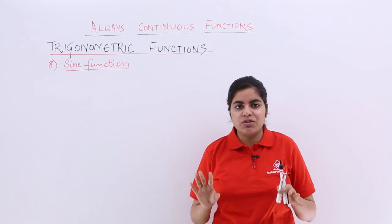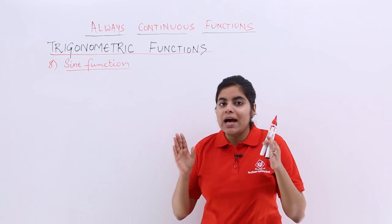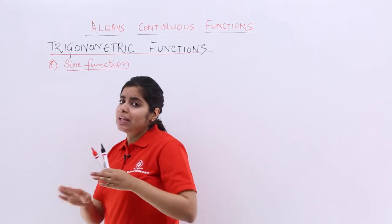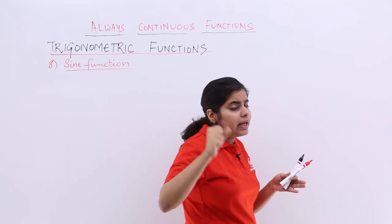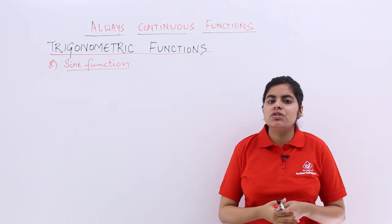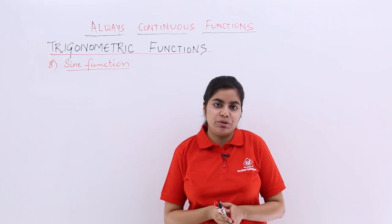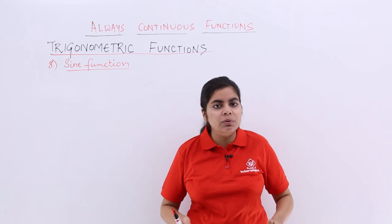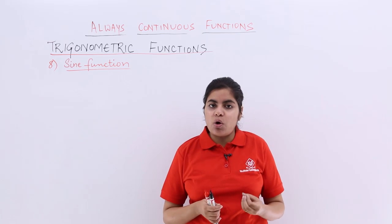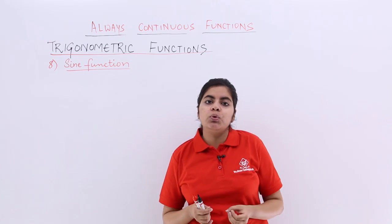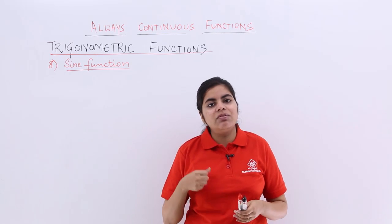So there are six trigonometric functions. Now as I already told you, without a miss you have to memorize that if in any question you find trigonometric functions, they will always be continuous. There's no problem with proving them, but we'd be wasting our time. It's always tricky to prove them again and again, so it's better we memorize them.